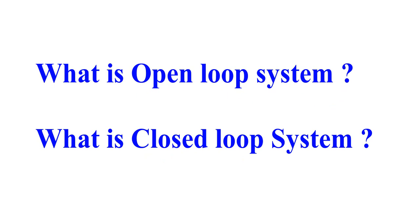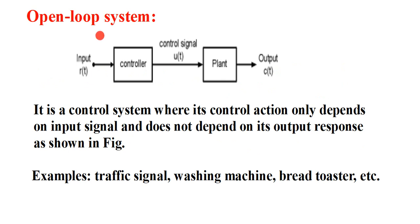First we are discussing what is open loop system. An open loop system is a control system where its control action only depends on the input signal and does not depend on its output response. The basic block diagram of open loop system contains a controller and a plant. Input is given and output is here — the output does not depend on the output response, it only depends on input.